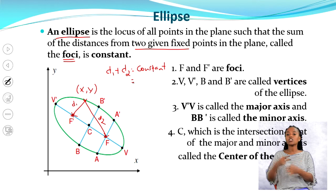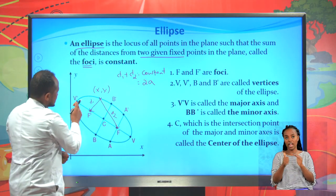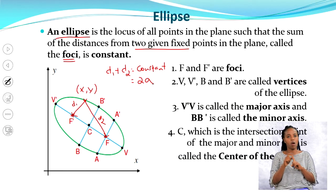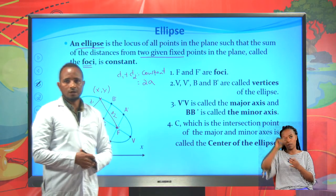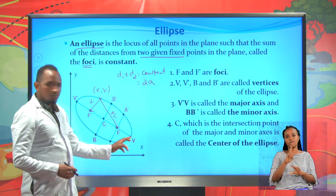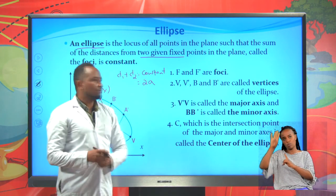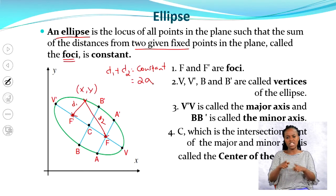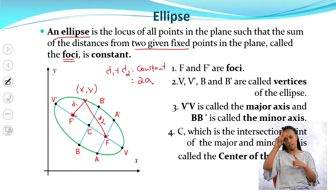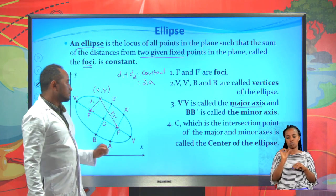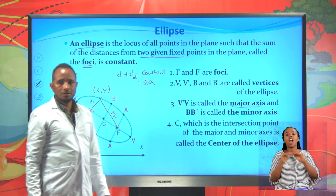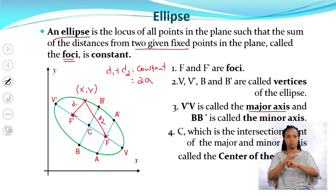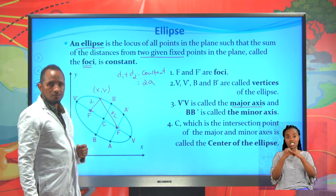By the way, this constant is equal to 2a, which gives the length from v up to v prime. Now let's see the terms. F prime and F we call them foci. And v prime, v, b prime, b — we call them vertices of the ellipse. The largest distance v prime to v we call the major axis, and the small distance b to b prime is called the minor axis. The intersection point of b, b prime and v, v prime is called the center of this ellipse.